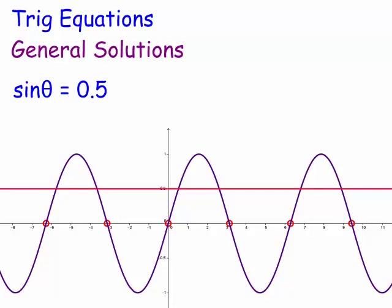Here we've drawn the sine curve and also a line y equals a half, and basically what we are after are the solutions — where they are equal. These solutions are going to form a pattern, and what we're really after in general solutions is a pattern descriptor, something that describes the pattern. We have an n in them — n is just an integer value which can cycle through all integers.